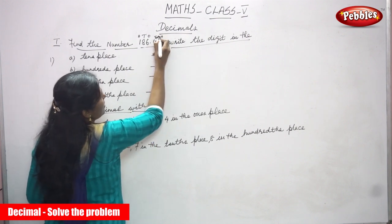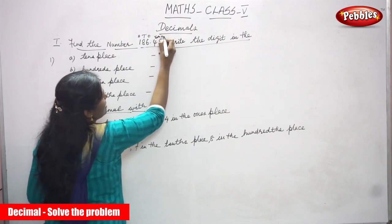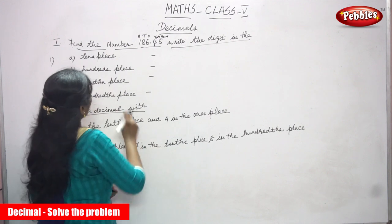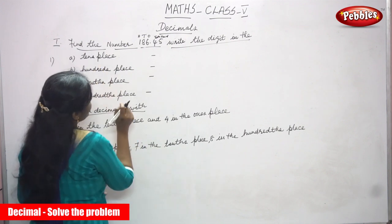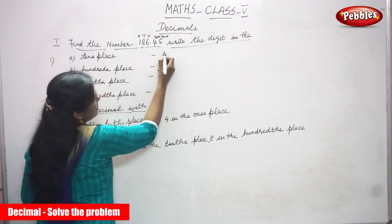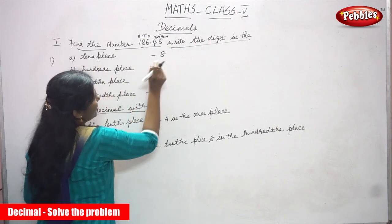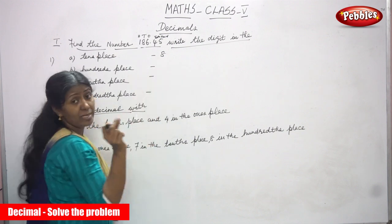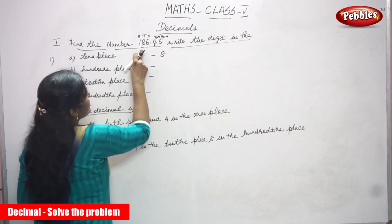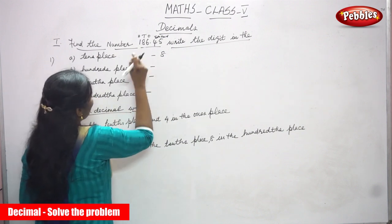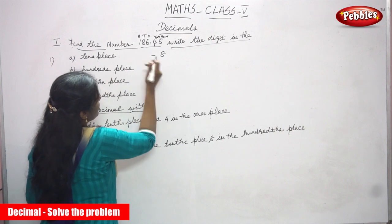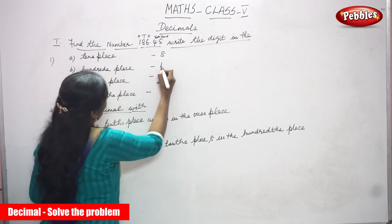Tens — what is the number? This is hundreds. So tens place, what is the number? That is 8. So write the digit — you must write only the numeral. So tens place, 8 is the number. Hundreds place, what is the number? 1.